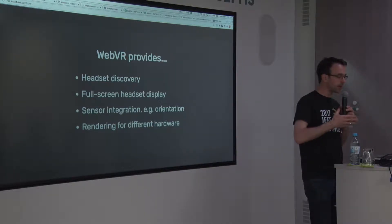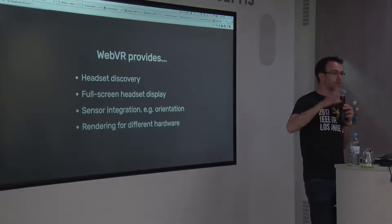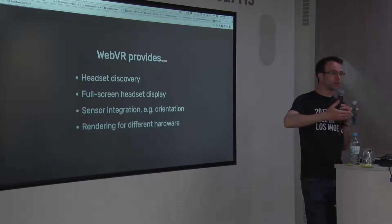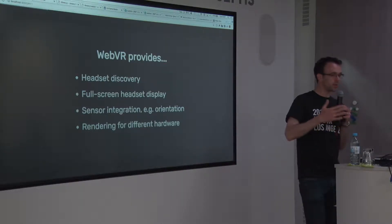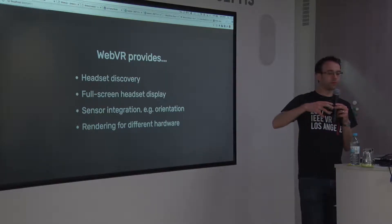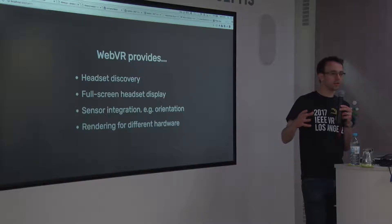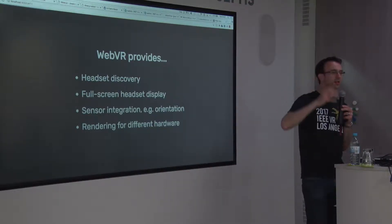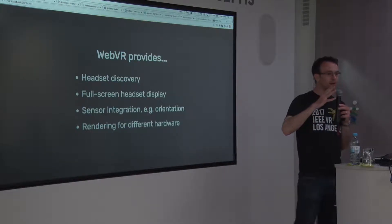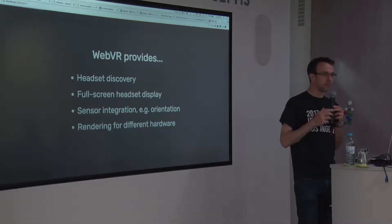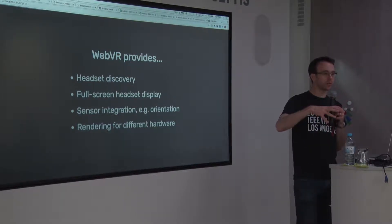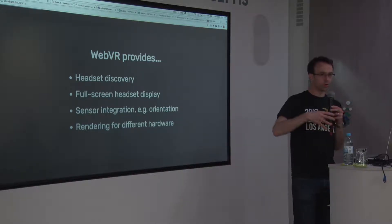WebVR is able to launch full screen and, more importantly in the Gear VR case, it is able to get the sensor data from the actual headset itself. With the phone inside cardboard, it just uses the sensors in the phone — the accelerometer API. But you could have other headsets like the HTC Vive or the Oculus Rift that have their own sensors in the headset. In the case of HTC Vive, you have positional sensing with cameras that detect where you are, so you can move around in 3D space. WebVR provides that orientation and position data in a cross-platform way.